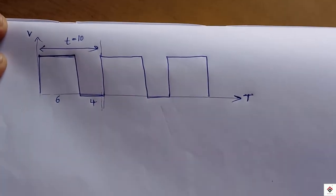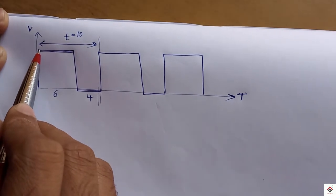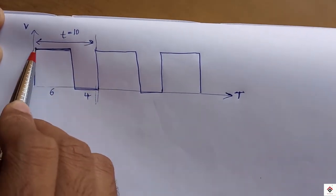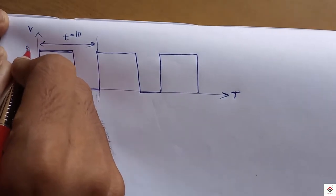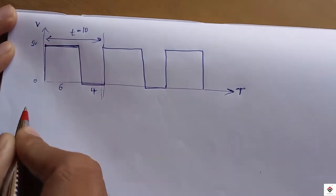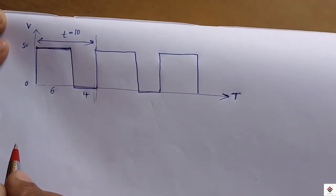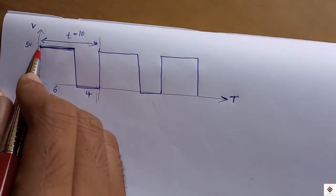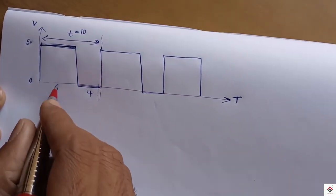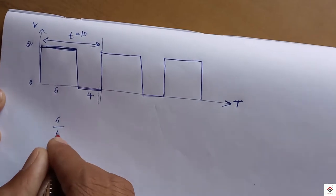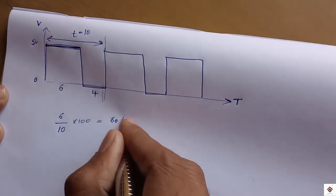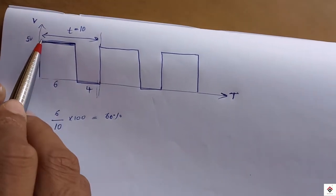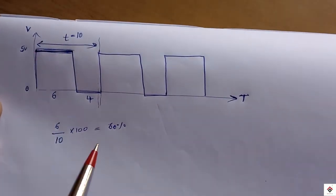So now we have to calculate the percentage at which the wave is 1. So this will be 5 volt in Arduino. This will be 0 because the operating voltage will be 5. To calculate the percentage of this part it is 6 out of total 10 into 100, which gives 60 percentage. So the duty cycle of this wave is 60 percentage.